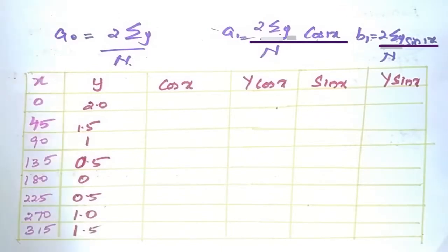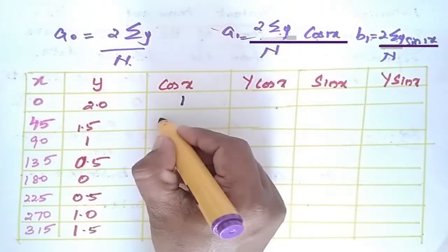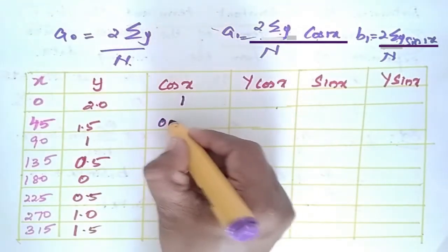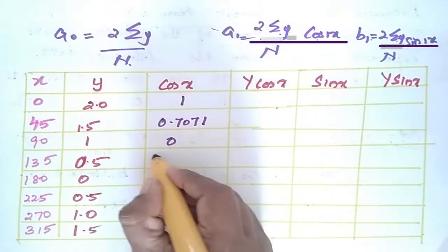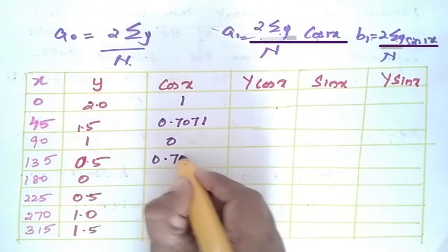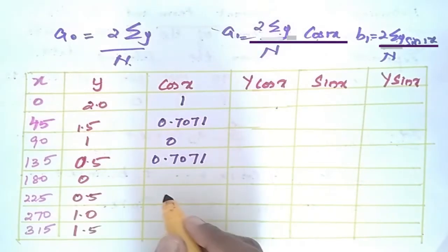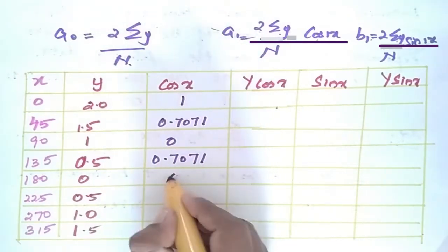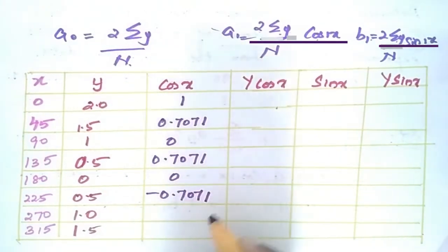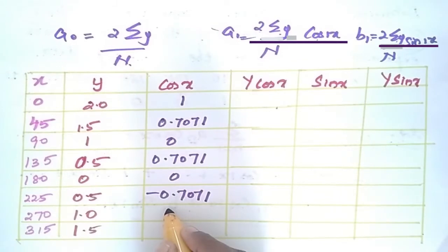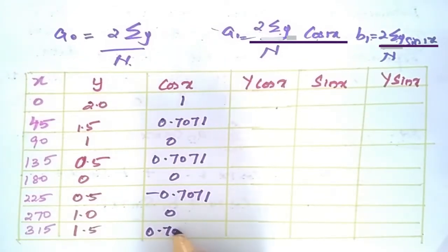The cos(x) column values are: 1.0, 0.7071, 0, 0.7071, 0, -0.7071, 0, 0.7071.